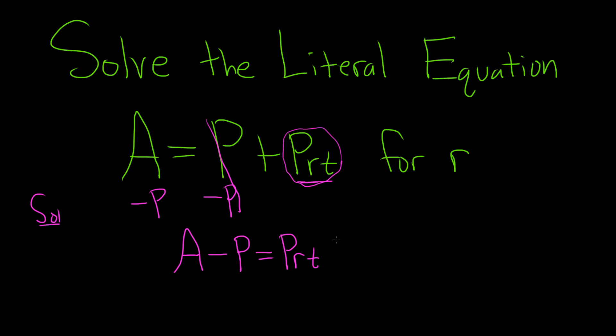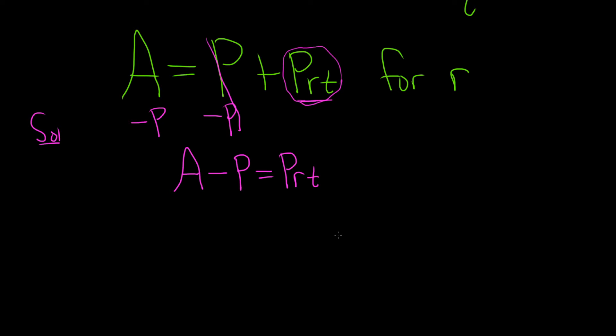And again, we're looking for little r. So little r is being multiplied by two things. It's being multiplied by P and by T.